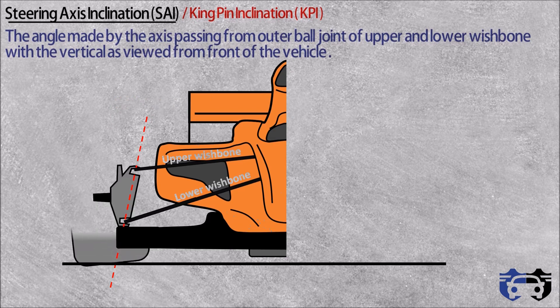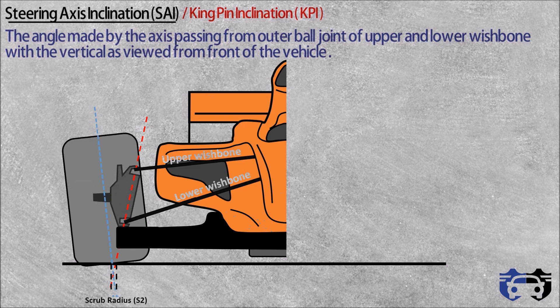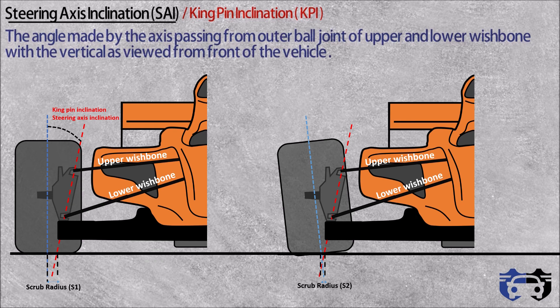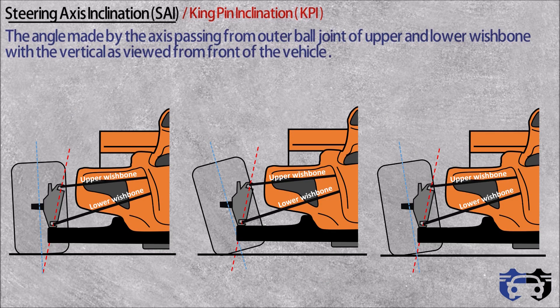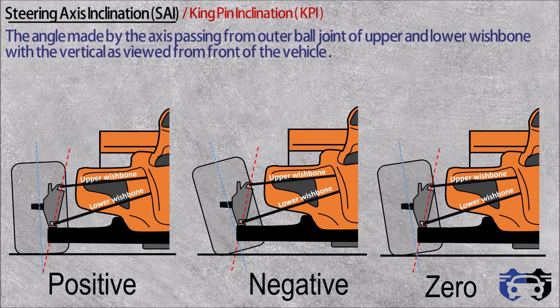If the scrub radius is very large, it will lead to an increase in driver effort at low speed. So for decreasing the steering effort, we use the combination of steering axis inclination and positive camber. If we give a small amount of positive camber to the tire, it will reduce the scrub radius from S1 to S2, where S2 is less than S1. On reducing the scrub radius, driver effort will reduce at low-speed turning conditions, and tire wear will also decrease.